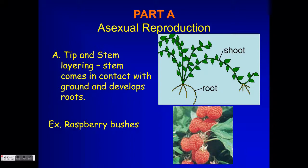Asexual reproduction can be thought of as cloning. If it involved sexual reproduction you'd have genes from mom and genes from dad, just like we learned in genetics. But in this case, because these two plants have the exact same genetics and came from the same source, they are identical to each other.